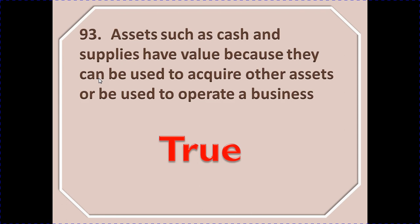Assets such as cash can be used to purchase machinery, furniture, or a computer. Cash is an asset that supports business operations — property must be purchased through it. So, assets such as cash and supplies have value because they can be used to acquire other assets or to operate a business. That is the right answer.